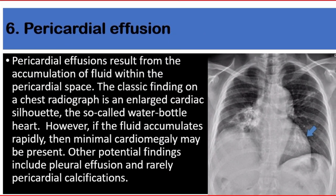Number six: pericardial effusion. Pericardial effusions result from accumulation of fluid within the pericardial space. The classic finding on chest radiograph is an enlarged cardiac silhouette — the so-called water bottle heart. However, if the fluid accumulates rapidly, then minimal cardiomegaly may be present. Other potential findings include pleural effusion and, rarely, pericardial calcification.